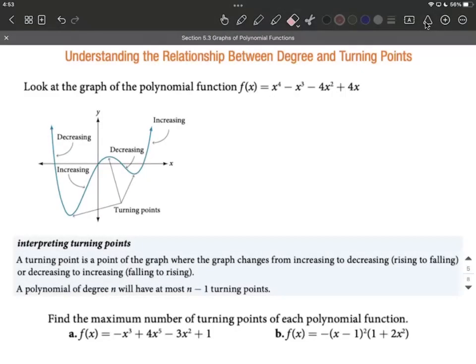Okay, let's make a connection between the degree of a polynomial and the number of turning points on that polynomial. We have a graph given to us of x^4 - x^3 - 4x^2 + 4x.